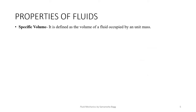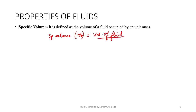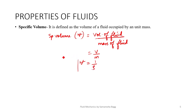Next, let's talk about specific volume. It is defined as the volume of a fluid occupied by a unit mass. Specific volume — you can use the symbol V with a cross over it — equals volume of fluid divided by mass of fluid, that is V upon m. Since m upon V is rho, specific volume is nothing but 1 upon density of the fluid. The unit of density is kg per meter cube, so the unit for specific volume is meter cube per kg.